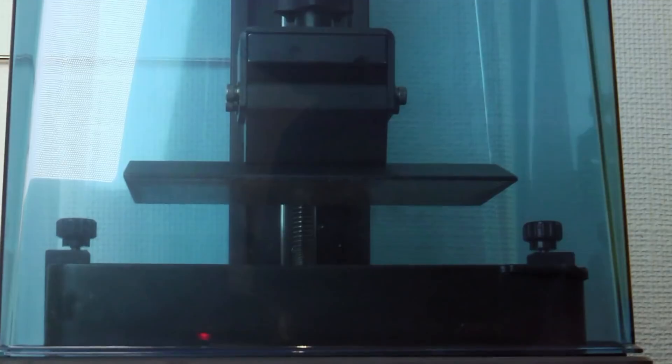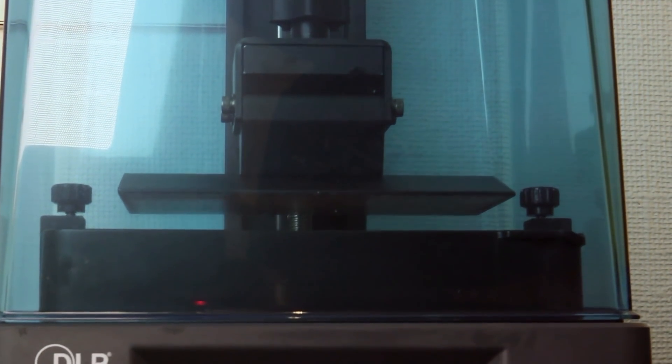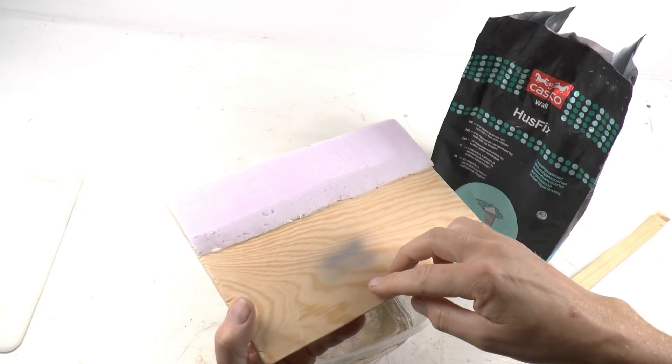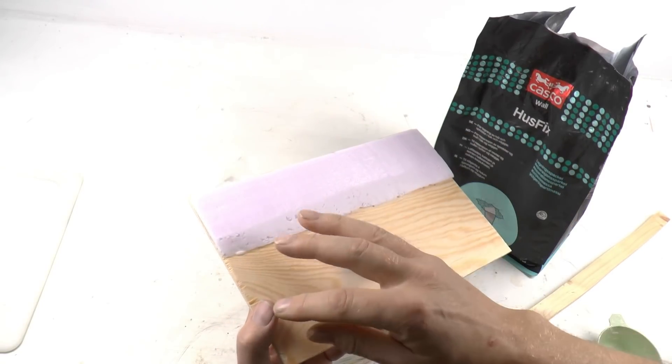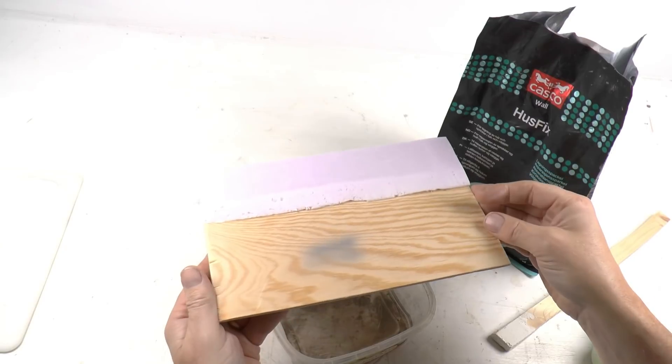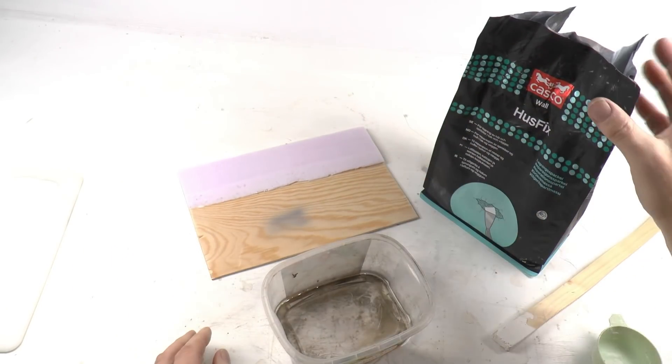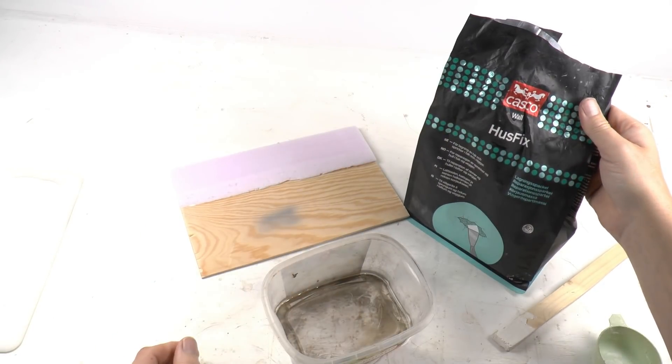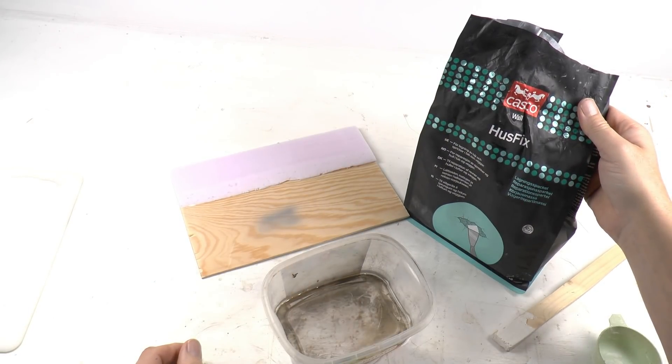Now since we got the print process going we can go back to the diorama and continue to shape the ground. To do this I'm using a putty or plaster. In my area it's called Huse Fix and it's a kind of concrete based material. So you mix this with water and get putty.